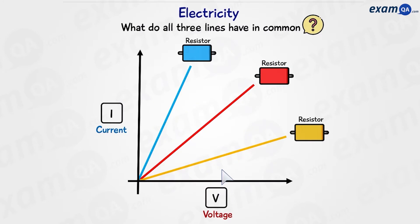But first, going back to these three examples, what do all three lines have in common? The answer is that they all have constant gradients. In other words, they are straight lines. A straight line in an IV graph means that it has constant resistance. They don't all have the same resistance, but for each one, the resistance remains constant for every voltage.